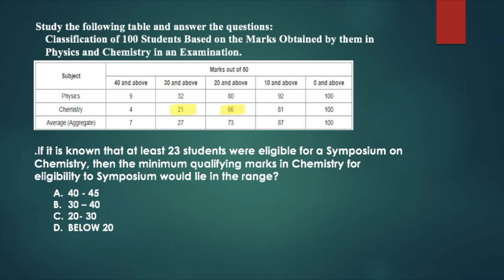And if we keep the eligibility as 20 and above, then 66 students become eligible. That means 23 students lie somewhere between these ranges. So somewhere between 30 and 20 will be the eligibility. It will be between 20 and 30. Very clear question and very clear answer. So my answer is C, 20 to 30. This is our range.